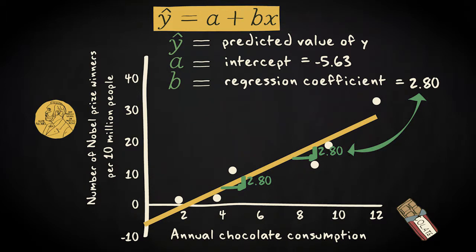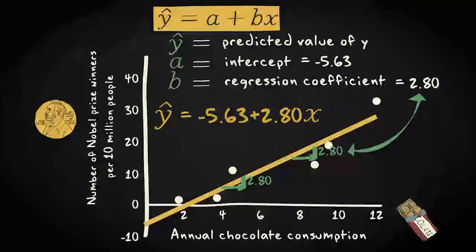This leads to the following regression equation: y hat equals minus 5.63 plus 2.80 times x.